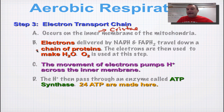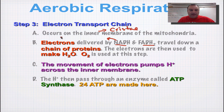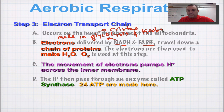You're going to need electrons for the electron transport chain, and those are going to be delivered by NADH and FADH2. NADH was made in glycolysis and the Krebs cycle, and FADH2 was made by the Krebs cycle.